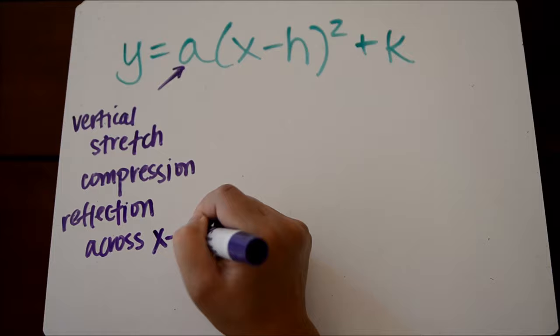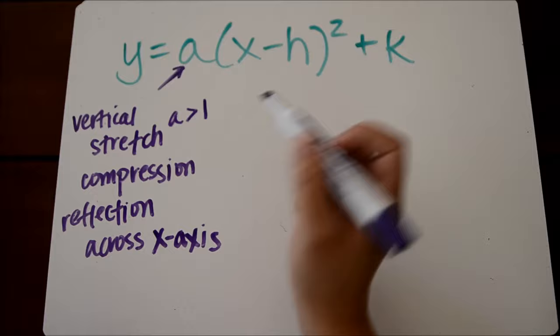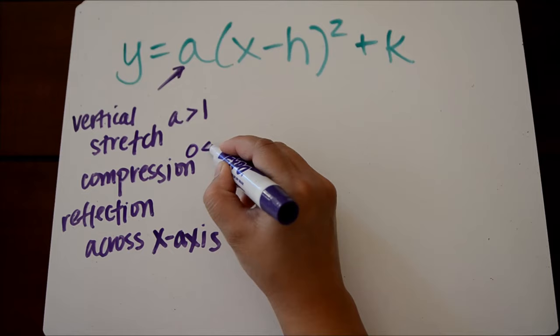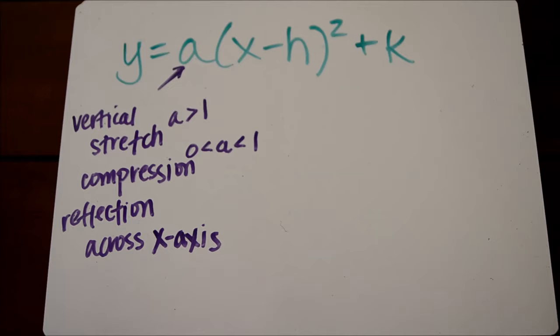So if our a value is greater than 1, then our graph has a vertical stretch, which means it looks narrow. If our a value is between 0 and 1, it means we have a vertical compression, which means your graph looks wide. And if the a value is negative, we have a reflection across the x-axis, which means our graph opens downward.